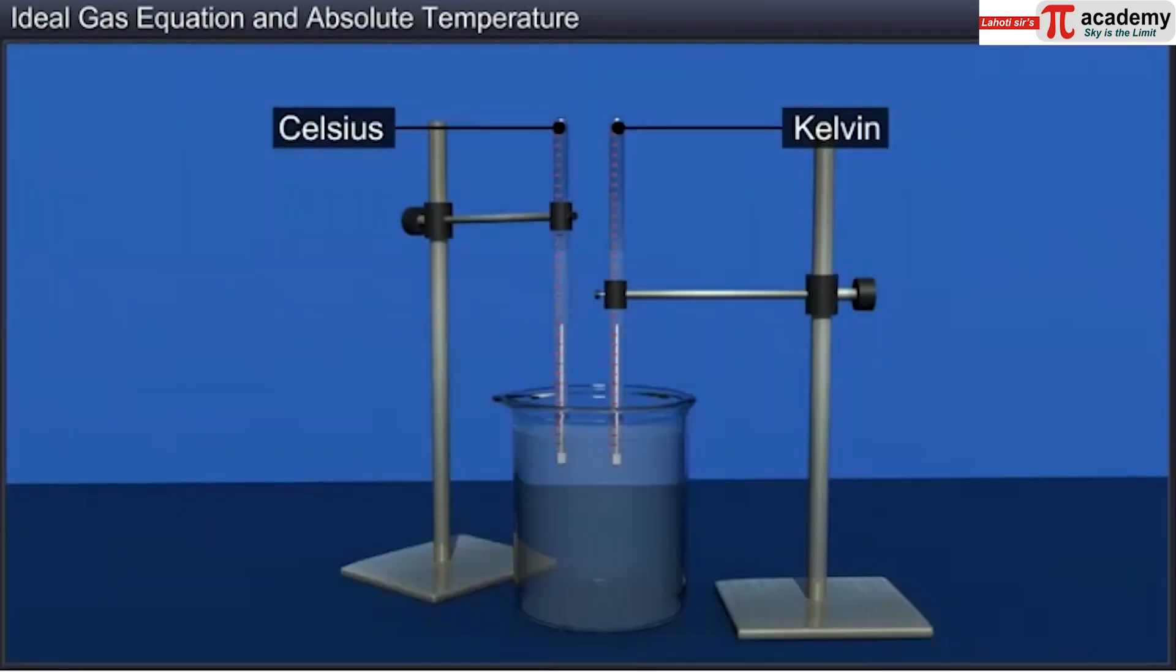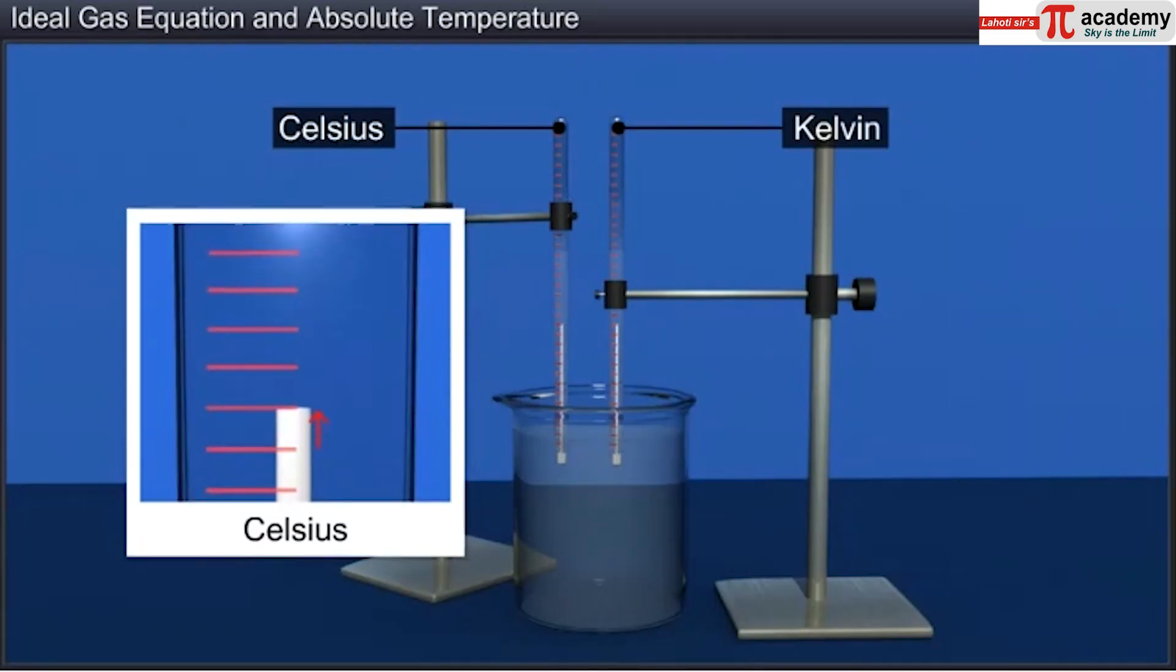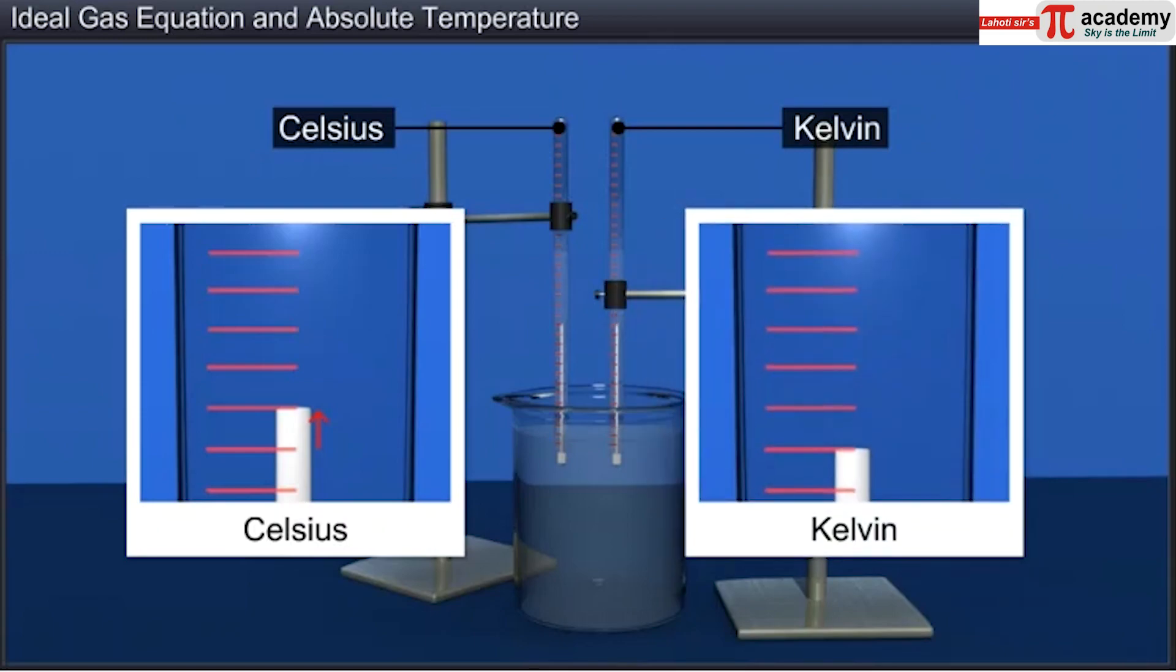For example, if the temperature of a body is increased by 1 degree centigrade, then the corresponding change on the absolute scale is 1 Kelvin.